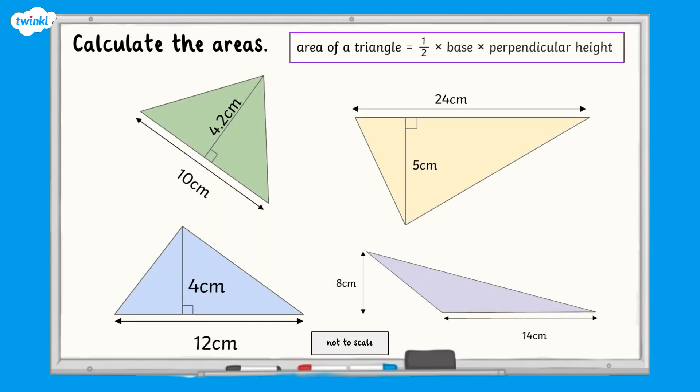Now it's your turn. Using what you've learnt, calculate the area of these triangles using the formula area equals half times base times perpendicular height.